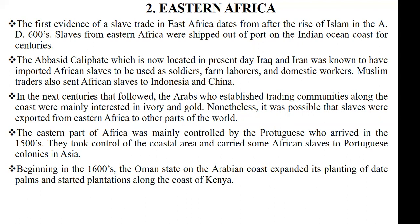The Muslim traders who were engaged in slave trade also sent Africans all the way to Indonesia and China. The Arabs who established trading communities along the coast were initially mainly interested in buying ivory and gold, but history indicates that slave trade had taken place in the eastern part of Africa several years even before the first evidence was found.